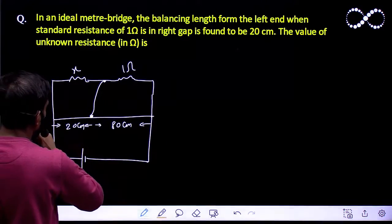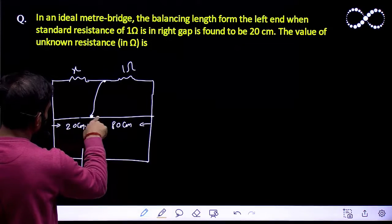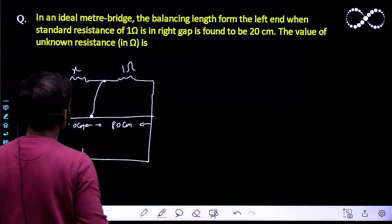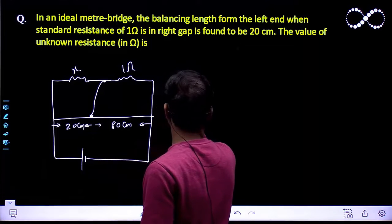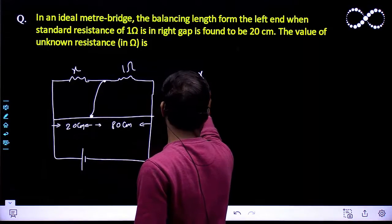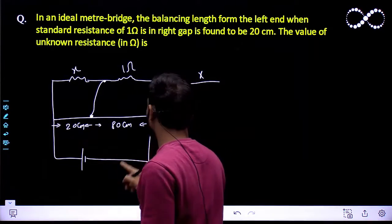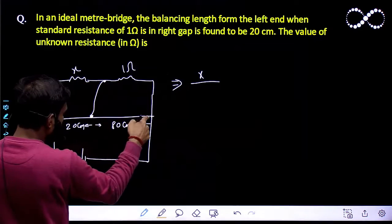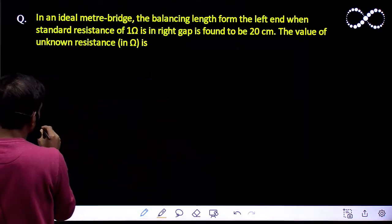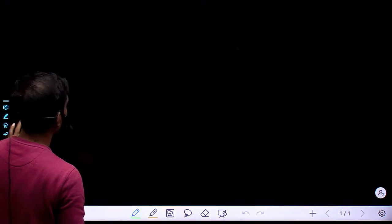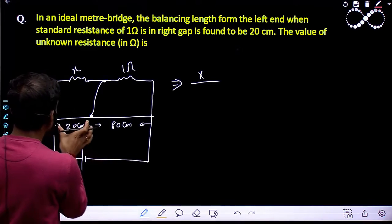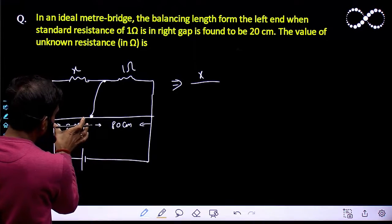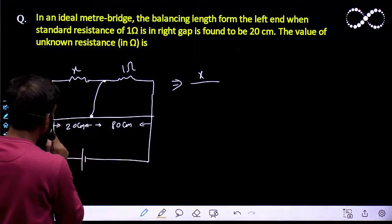So this will have some resistance. I can say x upon 20 cm. Let us assume the resistance per unit length of this wire is equal to y.